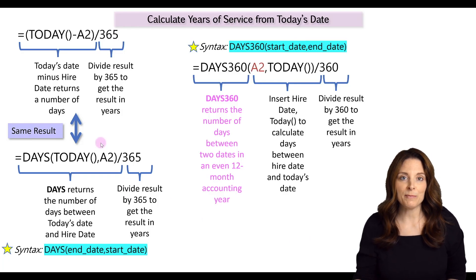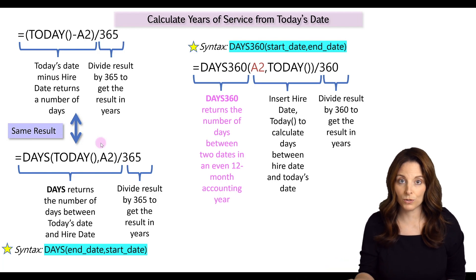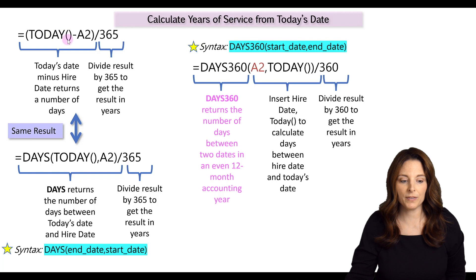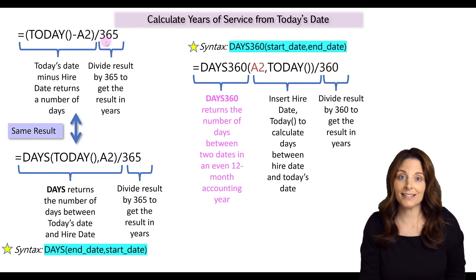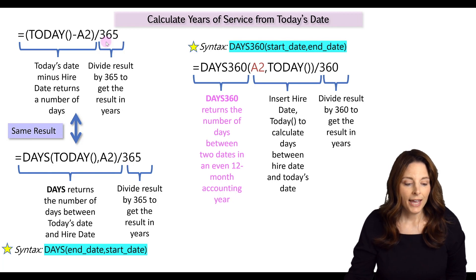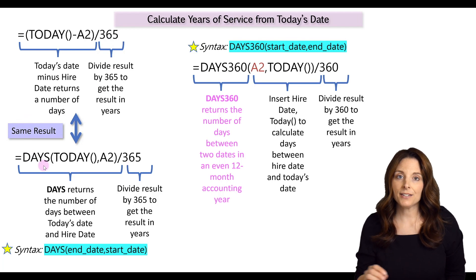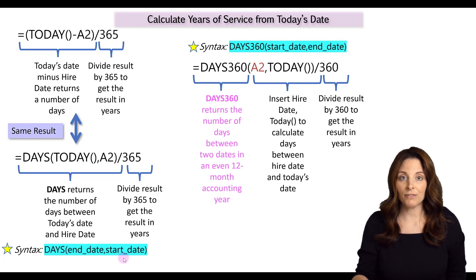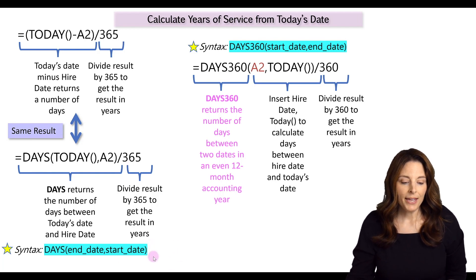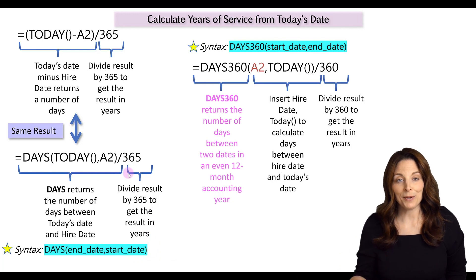Those first two formulas are essentially the same thing. Because Excel stores dates as sequential serial numbers, you can subtract dates to find the number of days between them. When we use the TODAY function — spelled out as TODAY with open and close parentheses — we subtract the hire date from it, then divide by 365 days in a year to get the number of years. The DAYS function is a date and time function in Excel; its syntax is DAYS, open parentheses, end date, comma, start date, close parentheses, then divided by 365.